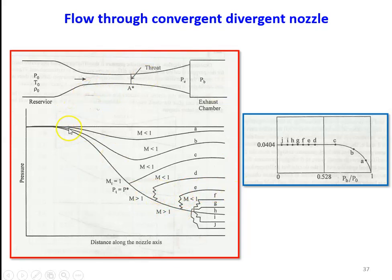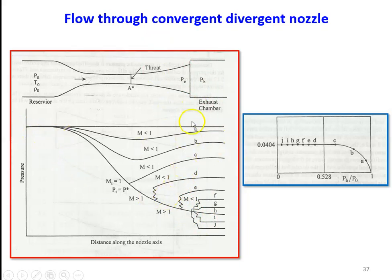Curve H is the design condition of the nozzle — the designed value. Curves F, G, I, and J represent conditions where the flow acts as a nozzle up to the exit, but there is a pressure difference that is adjusted within the exhaust chamber by means of a shock wave. These shock waves occur in the exhaust chamber. Curve H corresponds to the design value, while all other operating conditions are called off-design conditions — off-design flow characteristics of the convergent-divergent nozzle.